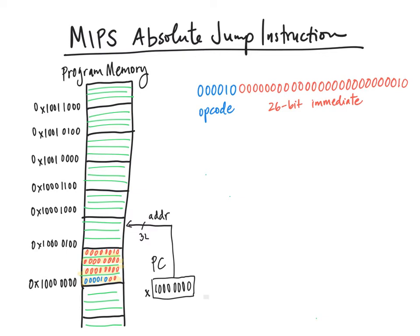Notice that all the instructions have addresses that end in 0, 0. Okay, all of these have 0, 0 here for the bottom two bits.